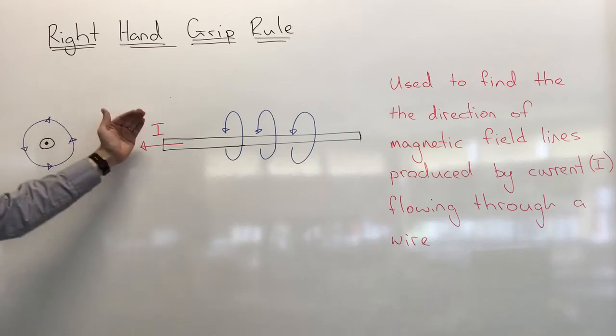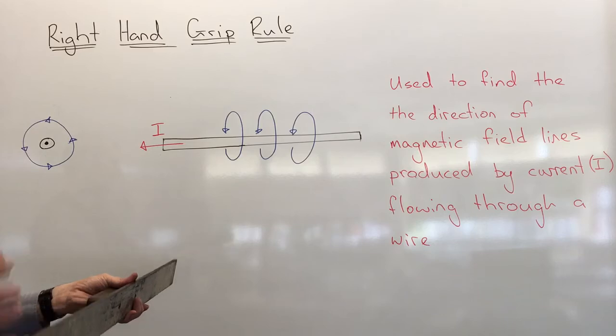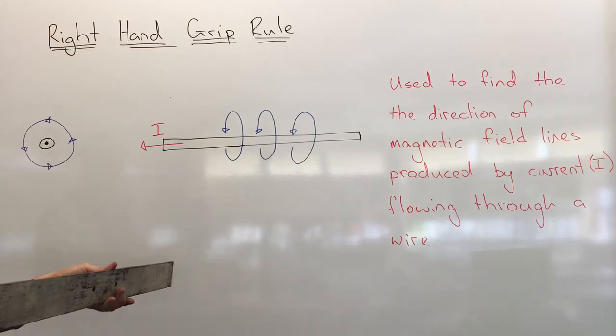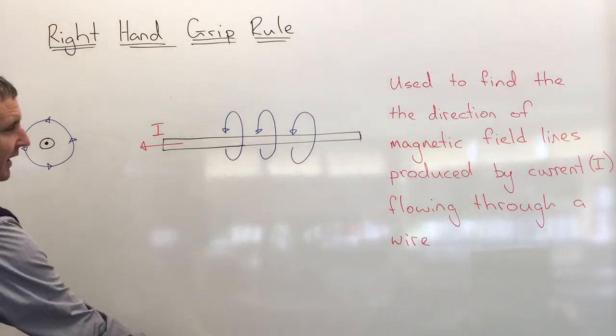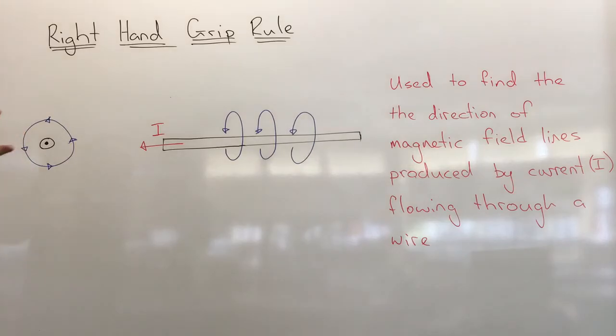And then if we turn this around that way, we would notice that our magnetic field lines are going this way, or actually anti-clockwise. So this is the right hand grip rule.